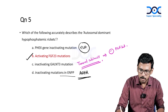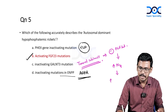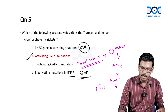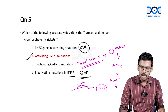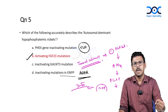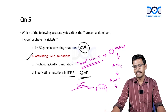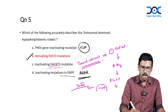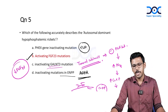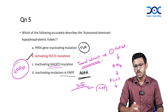When GALNT3 is absent, FGF23 becomes increasingly susceptible to cleavage and active FGF23 levels plummet. Reduced FGF23 means phosphorus excretion is reduced, leading to increased phosphate, increased calcium-phosphorus product, and calcium hydroxyapatite deposition around the joints. This is tumoral calcinosis — due to either inactivating GALNT3 mutation or inactivating FGF23 mutation. Conversely, activating FGF23 mutation causes autosomal dominant hypophosphatemic rickets.